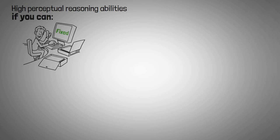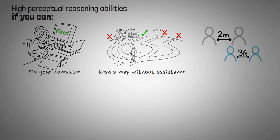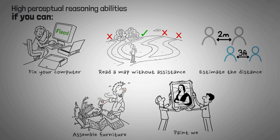You might have high perceptual reasoning abilities if you can take a computer apart and put it back together, read a map or find your way around a neighborhood without assistance, estimate the distance between two objects with ease, assemble furniture quickly, or draw and paint well.